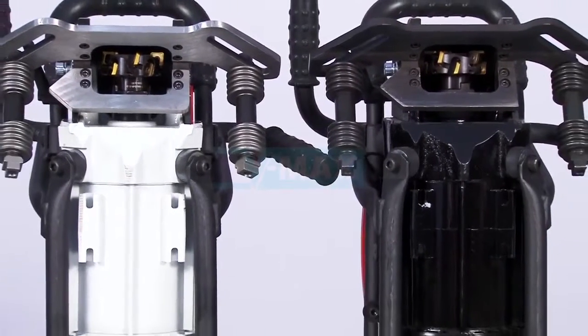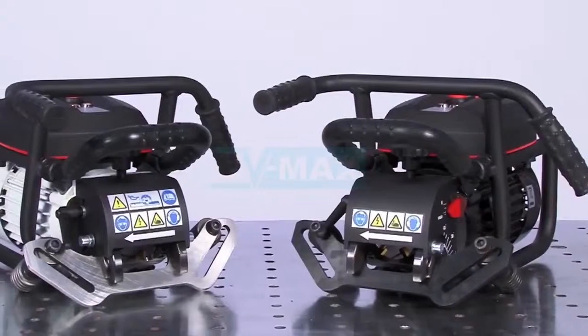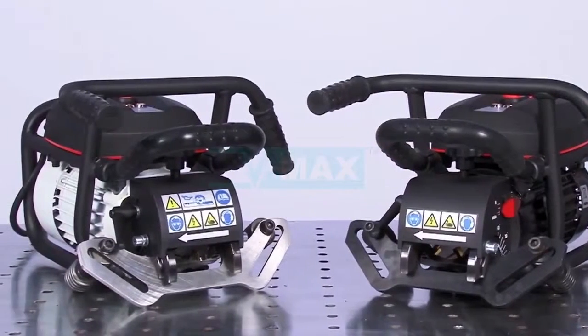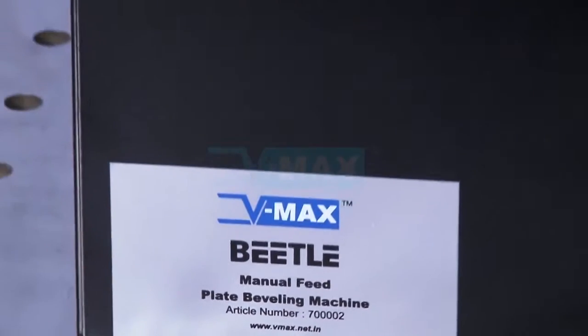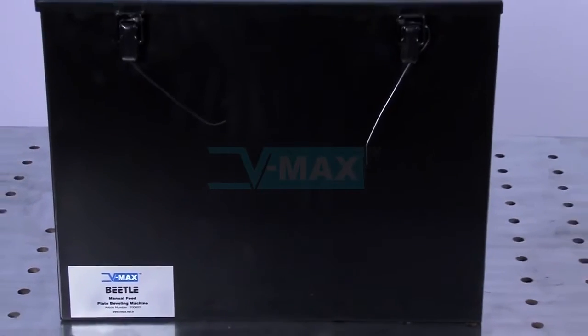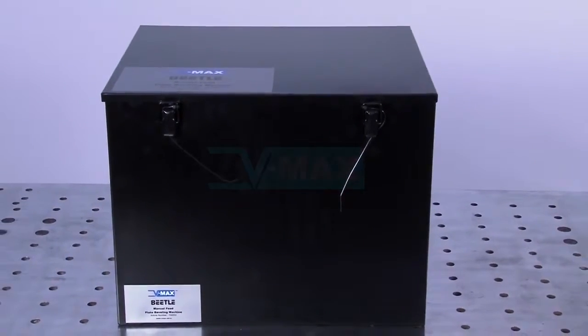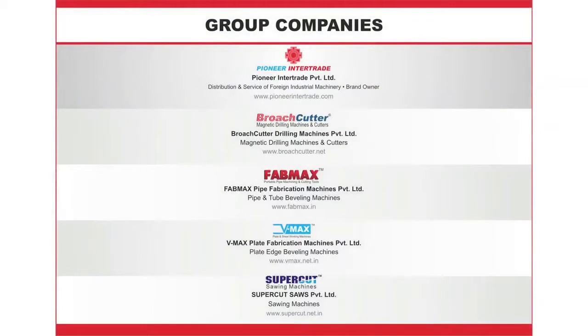Beetle is also available in SS version for beveling of stainless steel plates and pipes. Packed in a sturdy steel case with a tool set, Beetle is ready to go whenever you are. VMAX is a part of the Pioneer Intertrade Group of Companies.